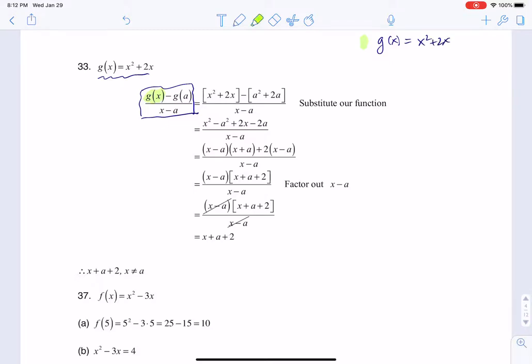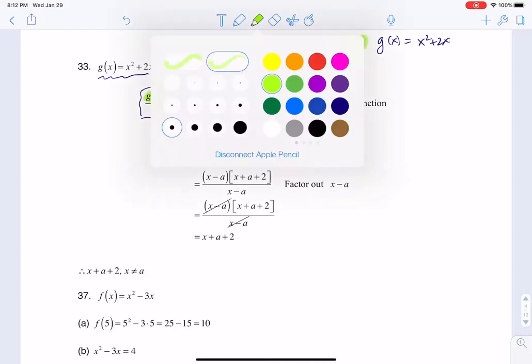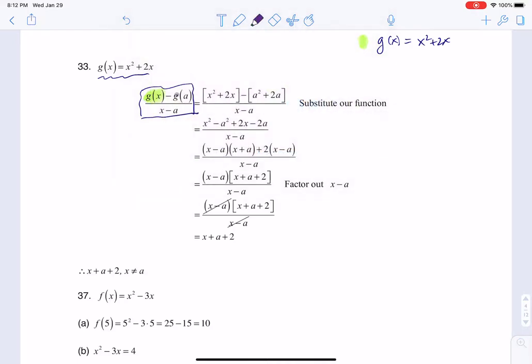So if the green term here is saying g of x, well I know what g of x is going to be equal to. But the next term I see is g of a, so I need to figure out what g of a is equal to. According to this function, g of a is a squared plus 2a. So I'm going to wind up substituting in for g of x and g of a.